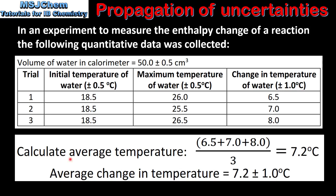Next we will calculate the average temperature change of the water. The change in temperature for each trial is added together and divided by three, giving us an average temperature change of 7.2°C. Including the uncertainty, the average change in temperature of the water is 7.2 ± 1.0°C.